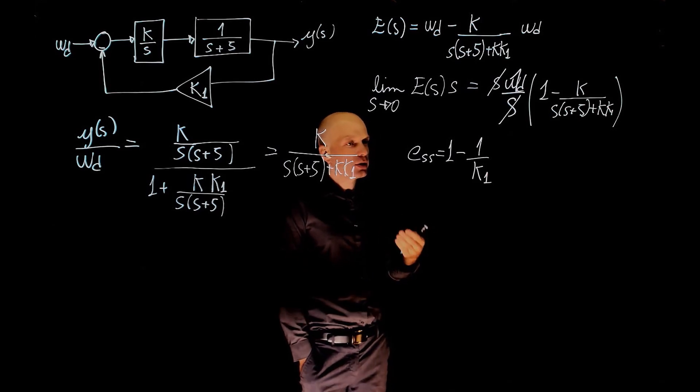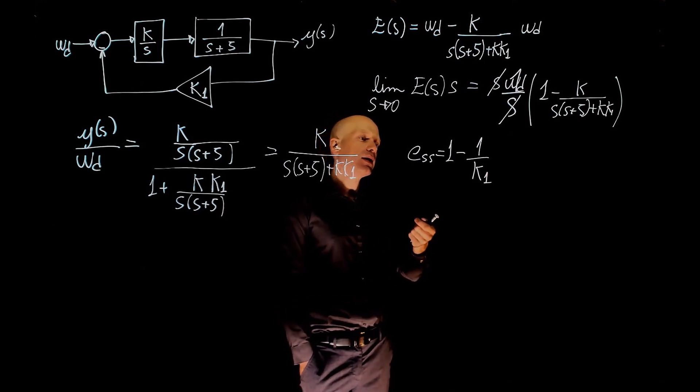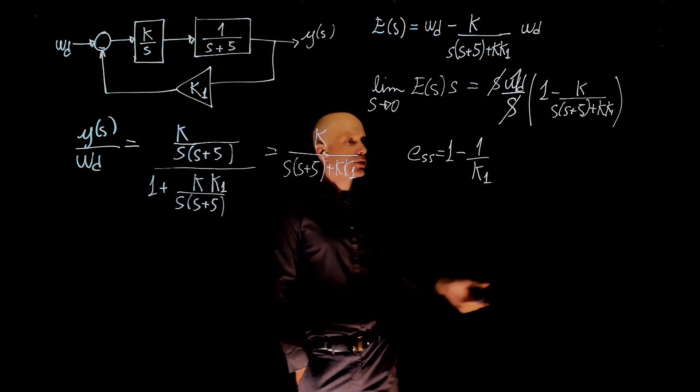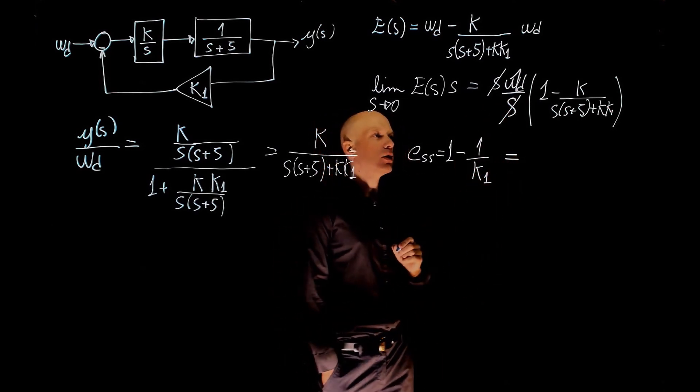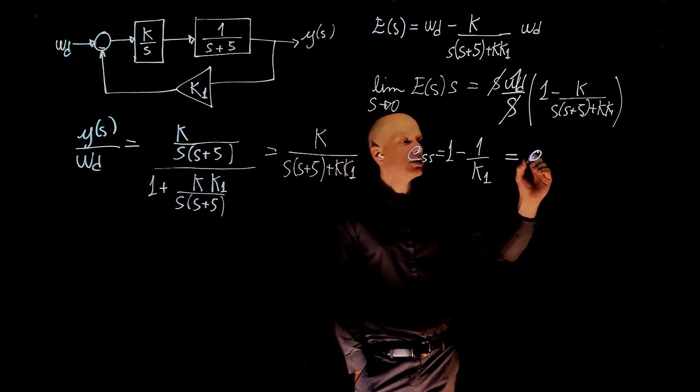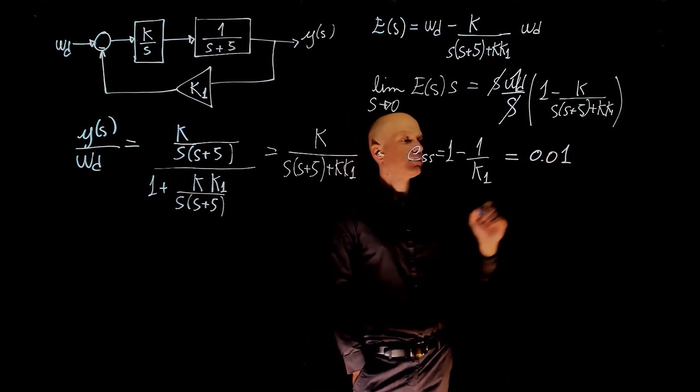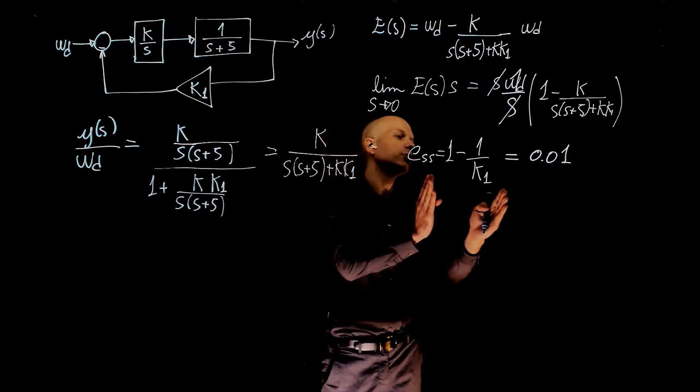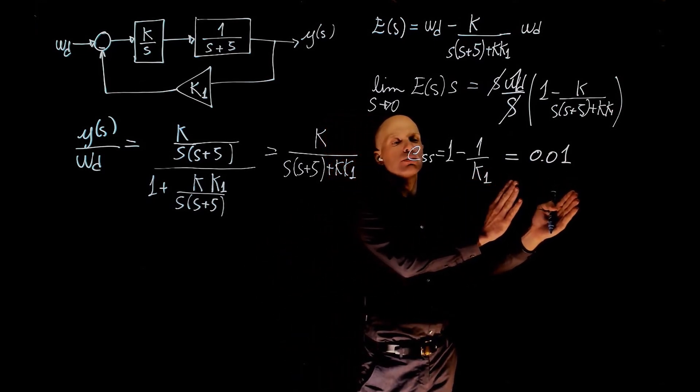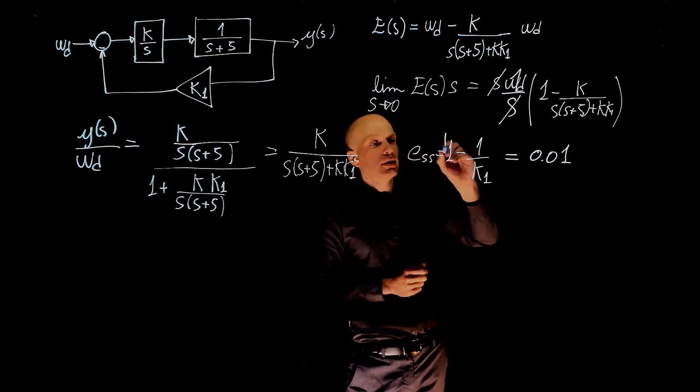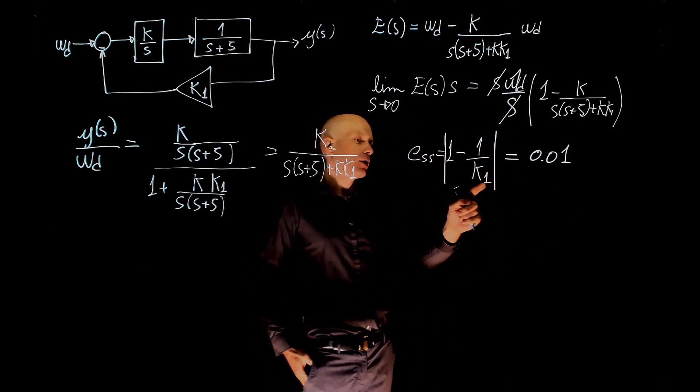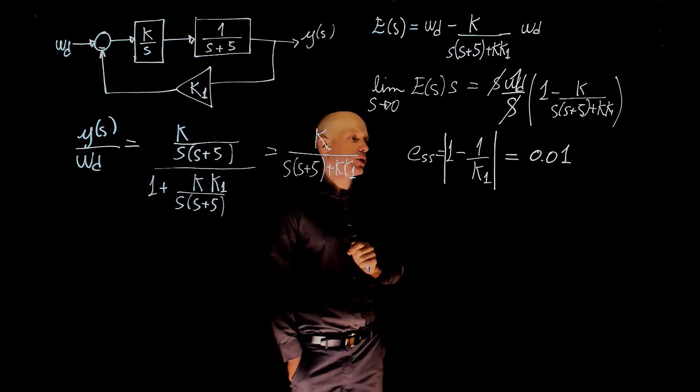And we want the steady-state error to be less than 1%. Our input here had a magnitude of 1. So now this is to be equal to 1% of 1, that is 0.01. But we want the magnitude of the error to be equal to 1%. So now taking the magnitude here, we need to solve for values of k1 to satisfy this equation.